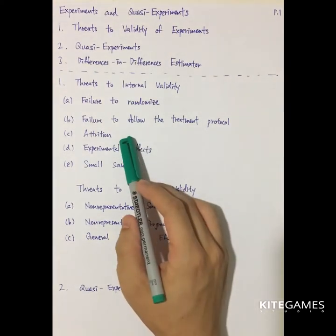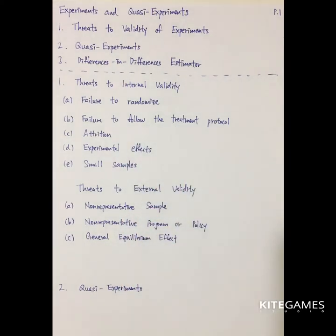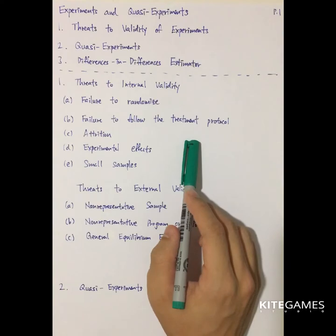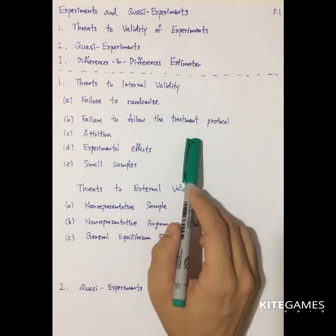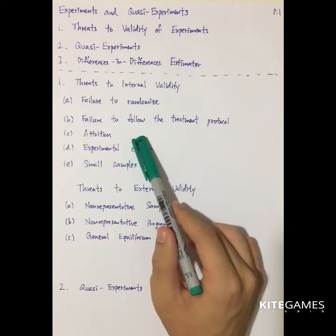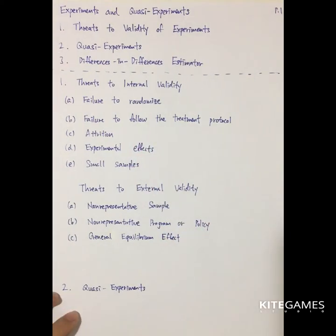Third is called attrition. Attrition means that the subject drops out of the study. For example, maybe a farmer doesn't want to reduce the fertilizer and even drops out of the experiment entirely — he doesn't want to compromise with the experiment. As a result, your conclusion is not effective.